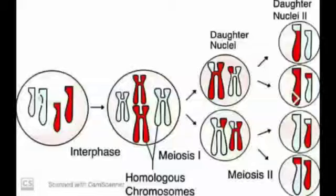And you can see that the number of chromosomes, look at the parent cell and now look at the daughter cells which are formed, it is just half as compared to the parent cell.